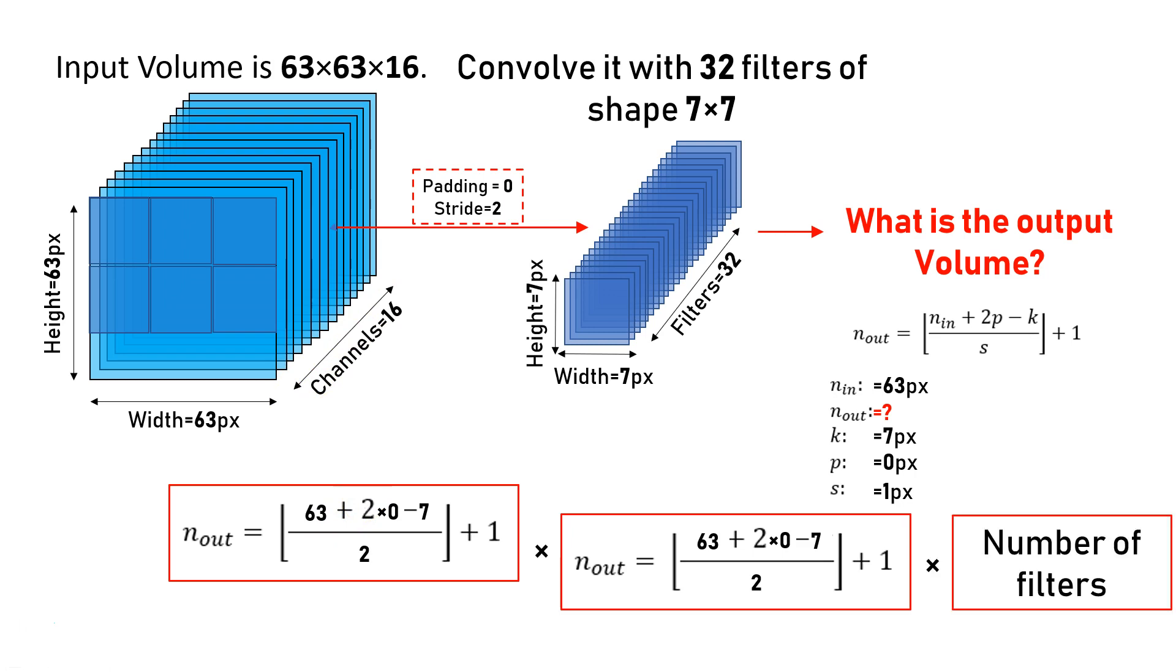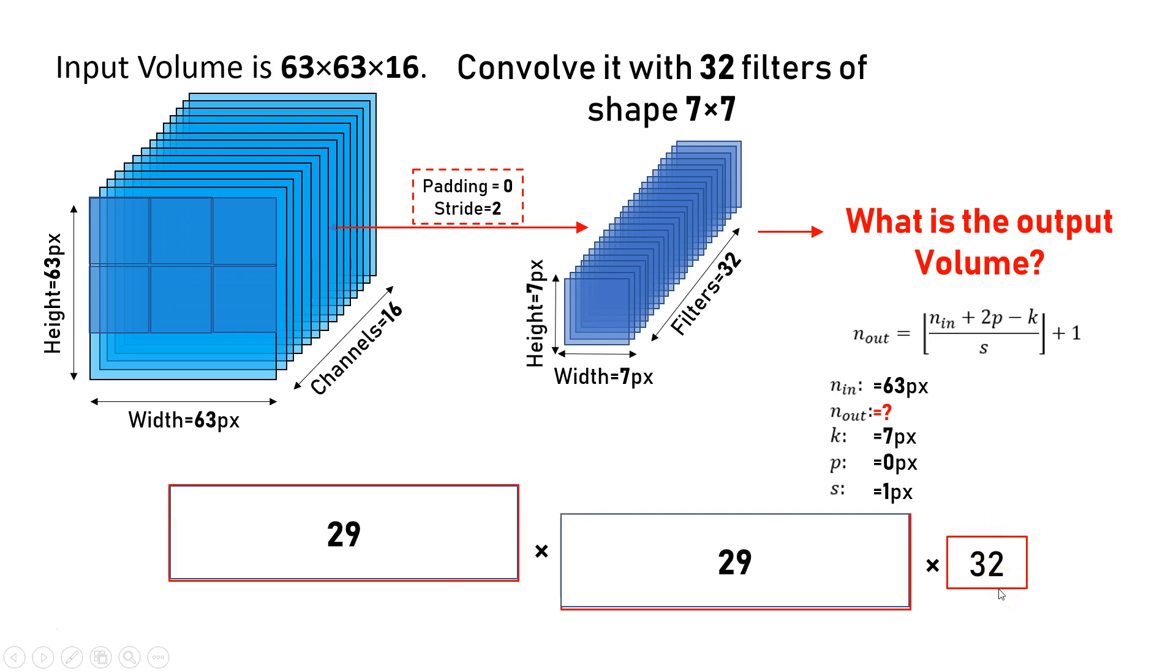Number of filters means channels. We have 32 filters - it comes from here, 32 filters. And we calculate 29 by 29 by 32. It is the dimension of the next convolutional layer.